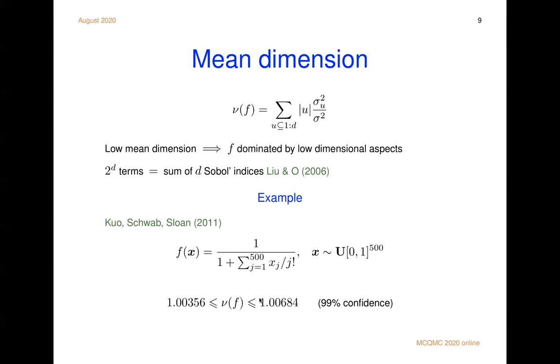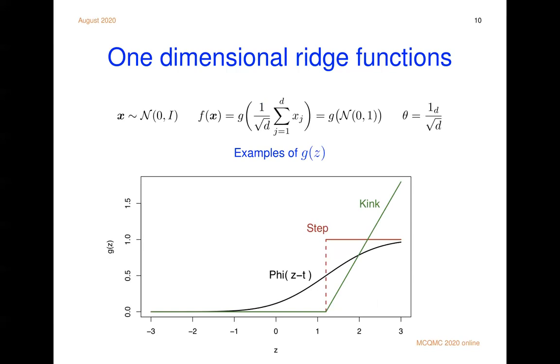Well, we're going to look at some ridge functions. The simplest one has r equals one and the following unit vector. Everybody is one over square root of d. So that's a simple unit vector. So that unit vector times x will have a normal zero one distribution. And now we can change g and see what happens.